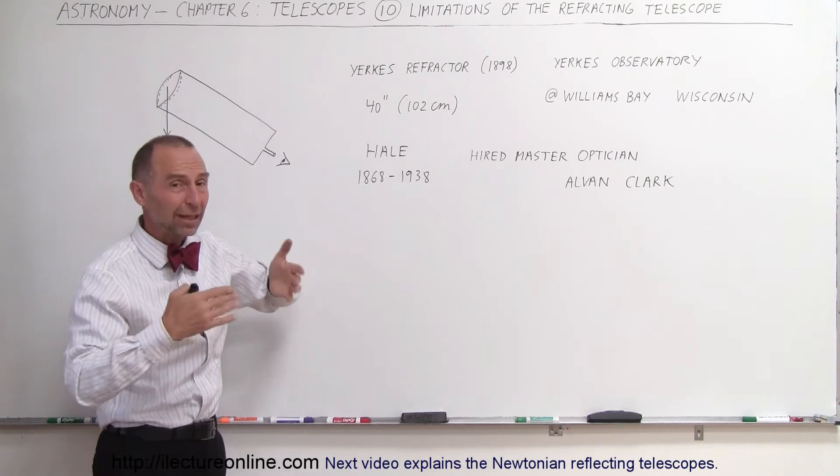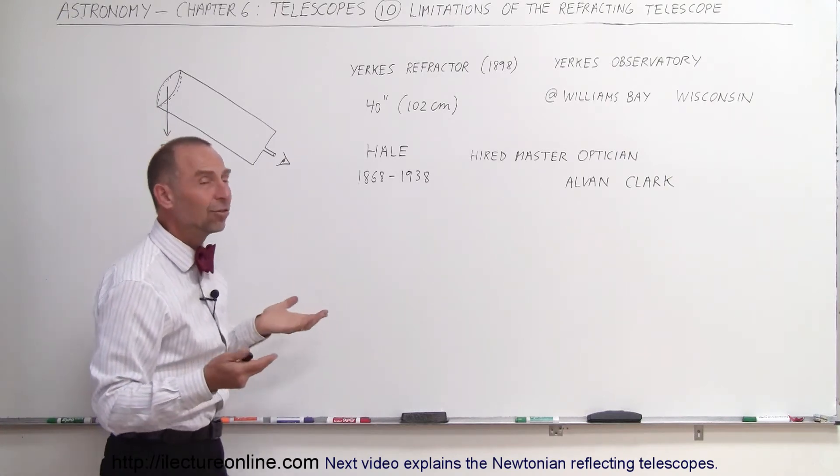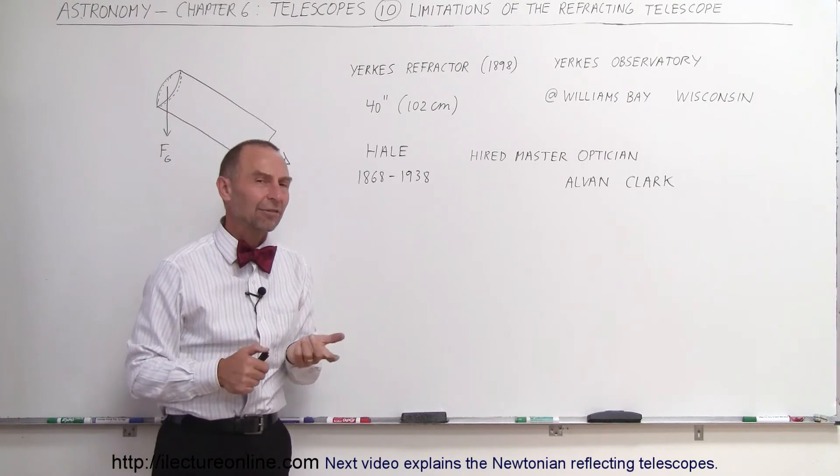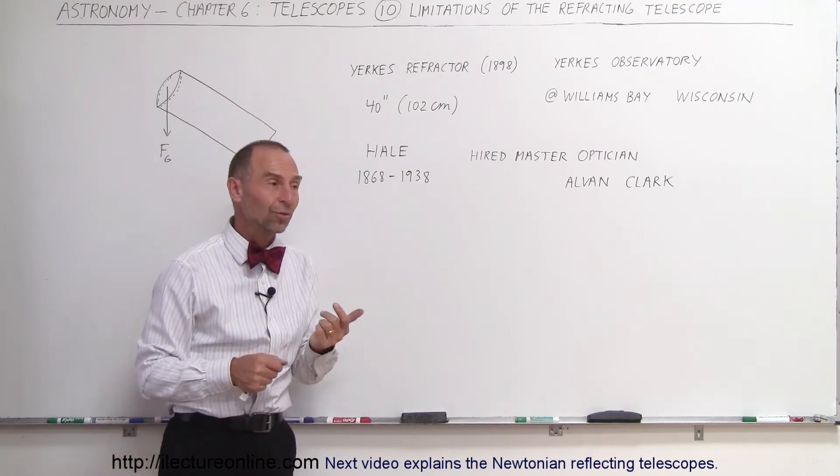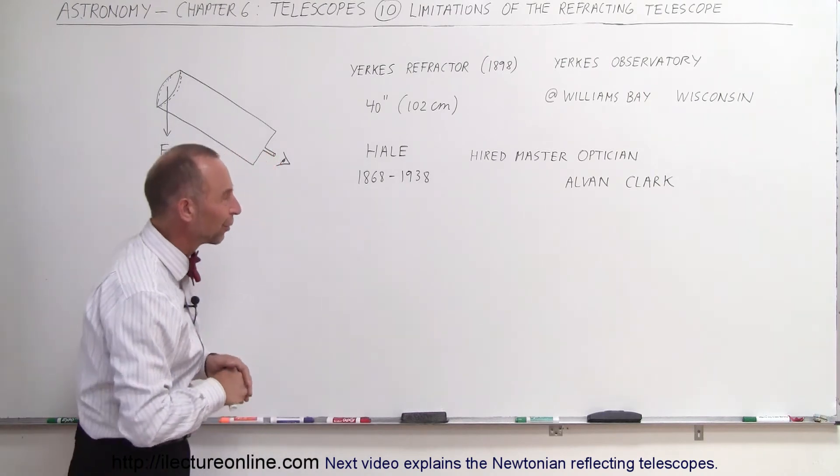The bigger the lens, the more gravity would interfere with being able to keep the shape. And so we didn't try to build bigger telescopes like that after that. We built different kinds of telescopes, namely the reflecting telescopes, and we'll talk about those later.